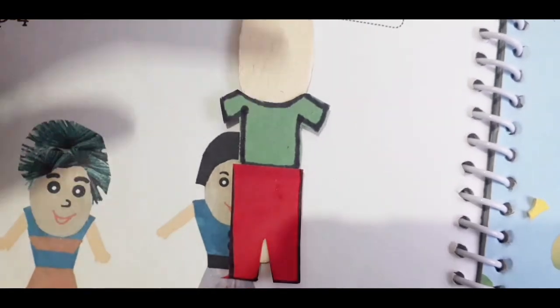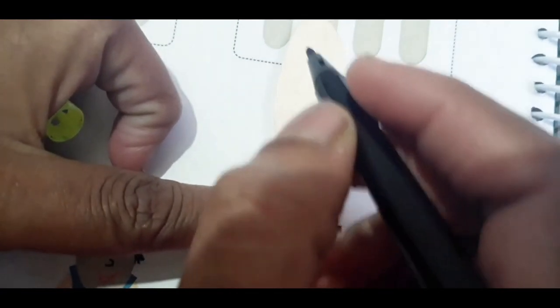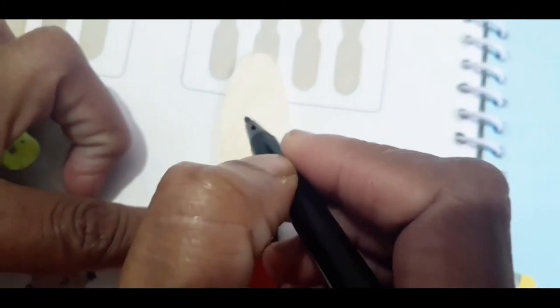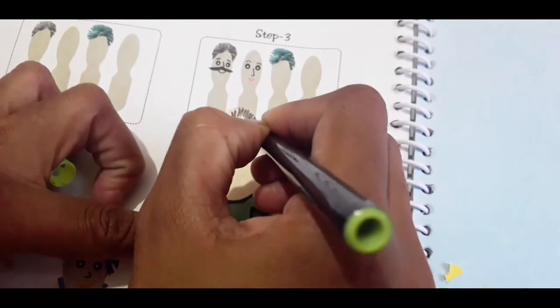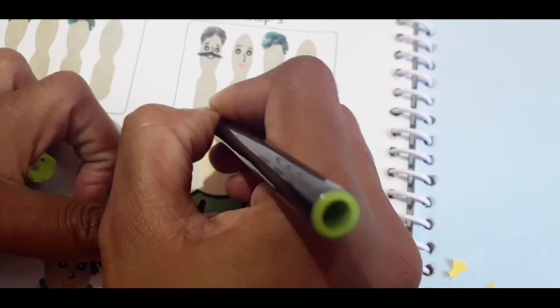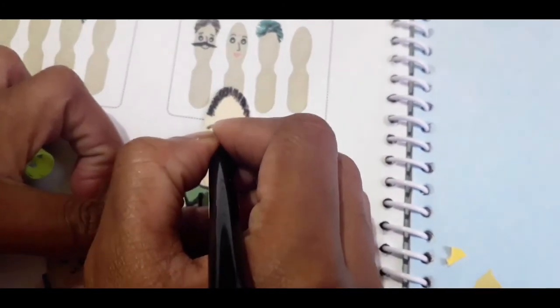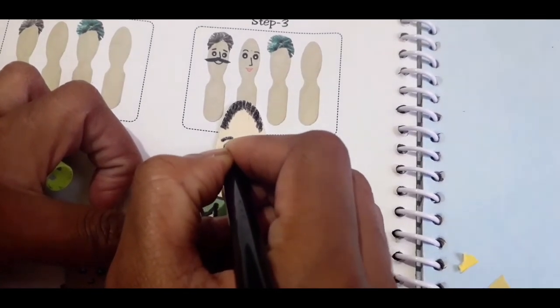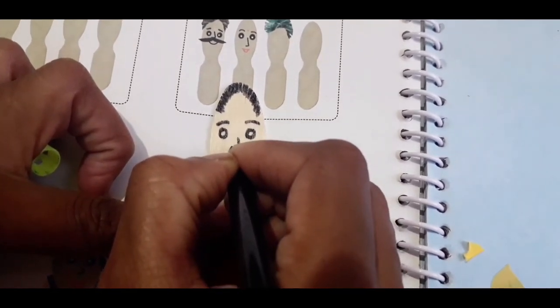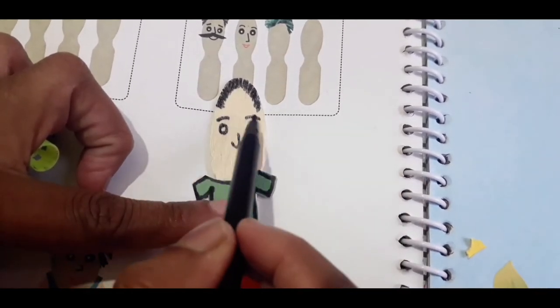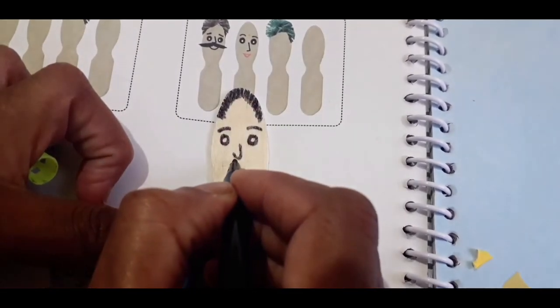Now children we have to make hair for papa - eyes, nose, moustache, everything okay. First we'll start with the hair. You can make like this lines, eyebrows, eyes. Can you see children how I have made the eyebrows, two small circles for eyes, one nose. Now we'll make the moustache.